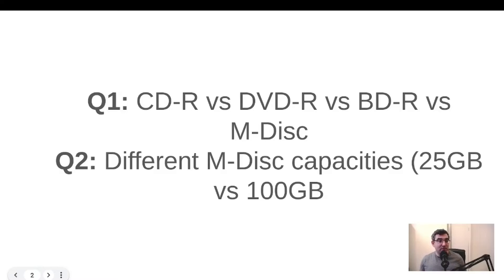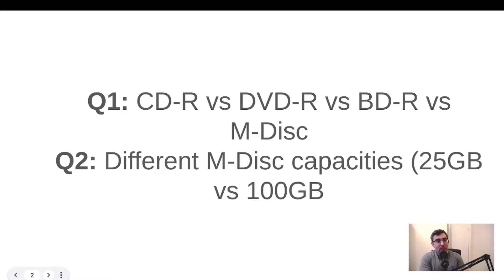I have two questions to answer in this video. Number one: looking at CDs versus DVDs and Blu-rays — the three main categories of optical media — are you being penalized for using CDs? Some people still use them, especially if your data is typically less than one gig. My question was which is cheaper per gigabyte. The second question was regarding M-Discs: there are three types — the 25GB BDR, the 50GB Blu-ray dual layer, and the 100GB Blu-ray quad layer BDXL. Is it cheaper to use the 100GB M-Discs?